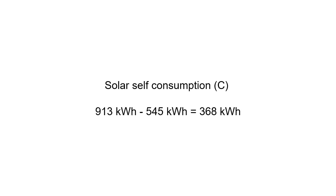And there we have it — the missing number we've been looking for: solar self-consumption. What your house has consumed during that billing period — 913 kilowatt hours was the total production of the solar. We know that from that production, 545 kilowatt hours was surplus to requirements and exported back into the grid and appeared on the Synergy Bill, which tells us that the difference between those two, 368 kilowatt hours, was your solar self-consumption.